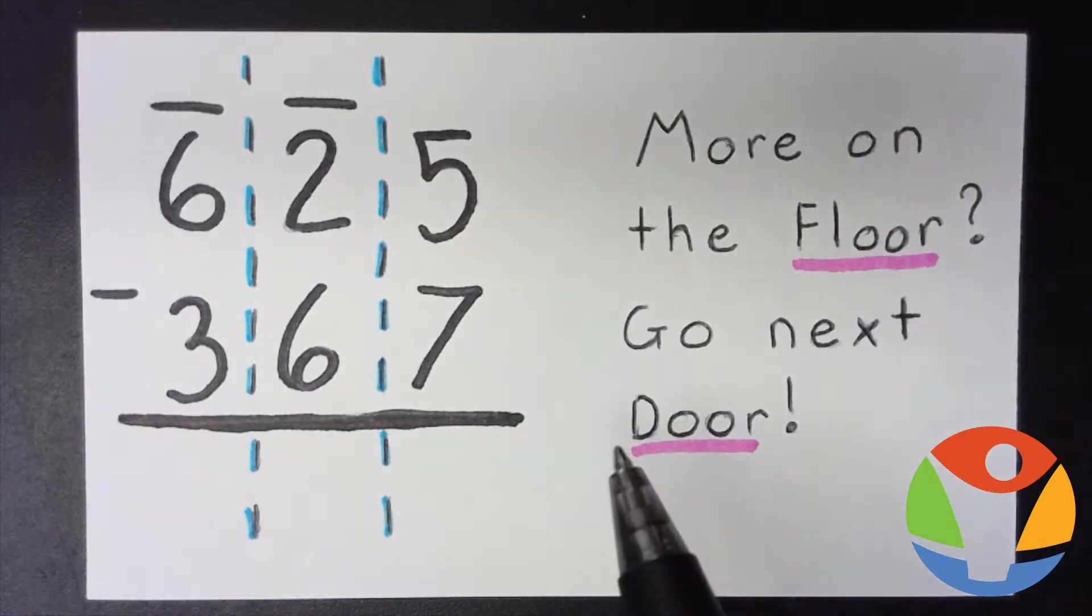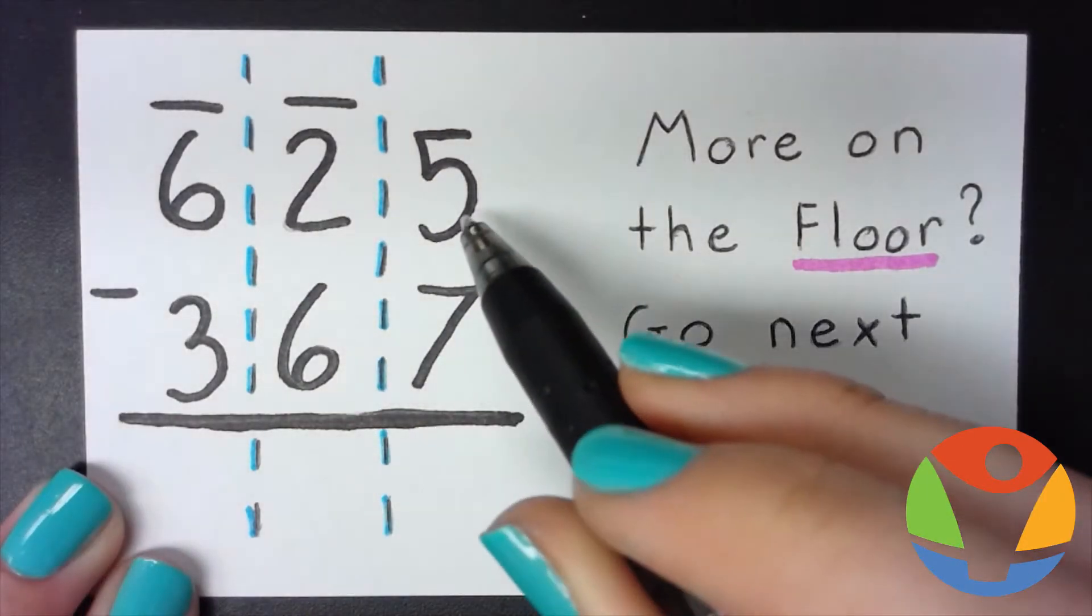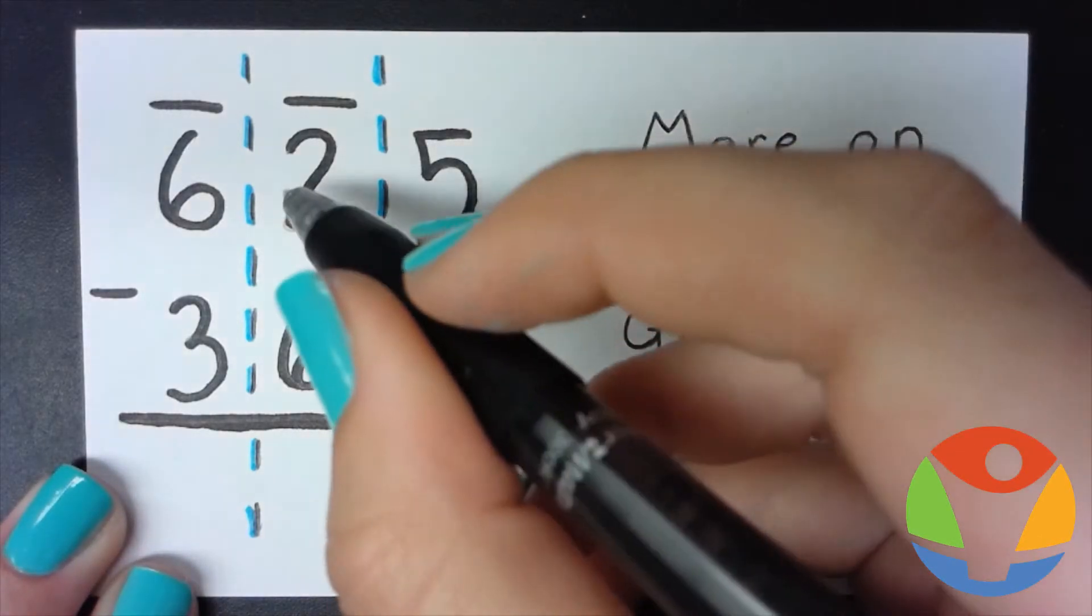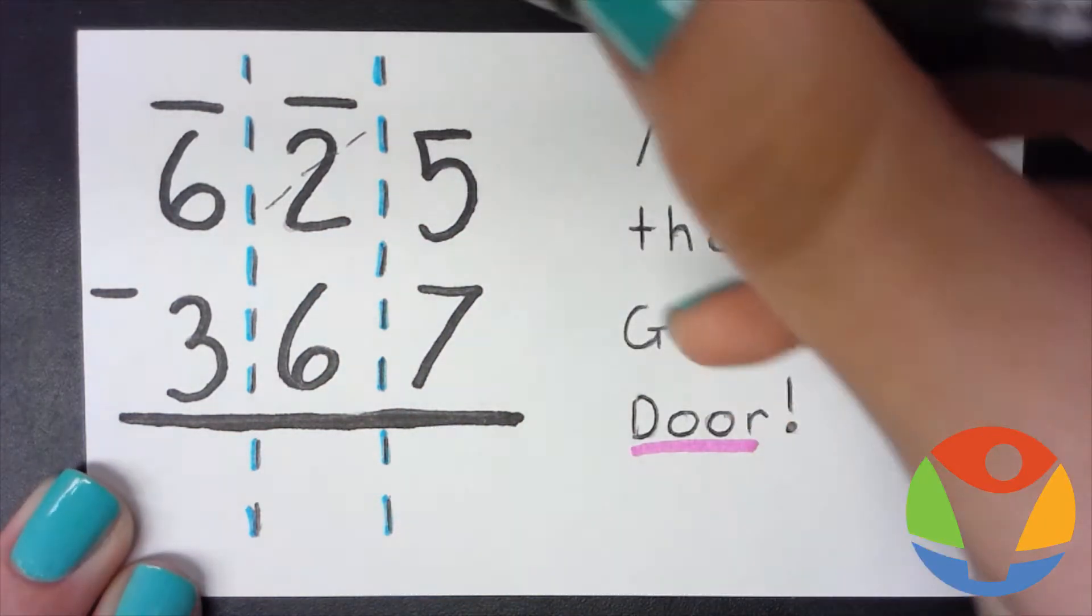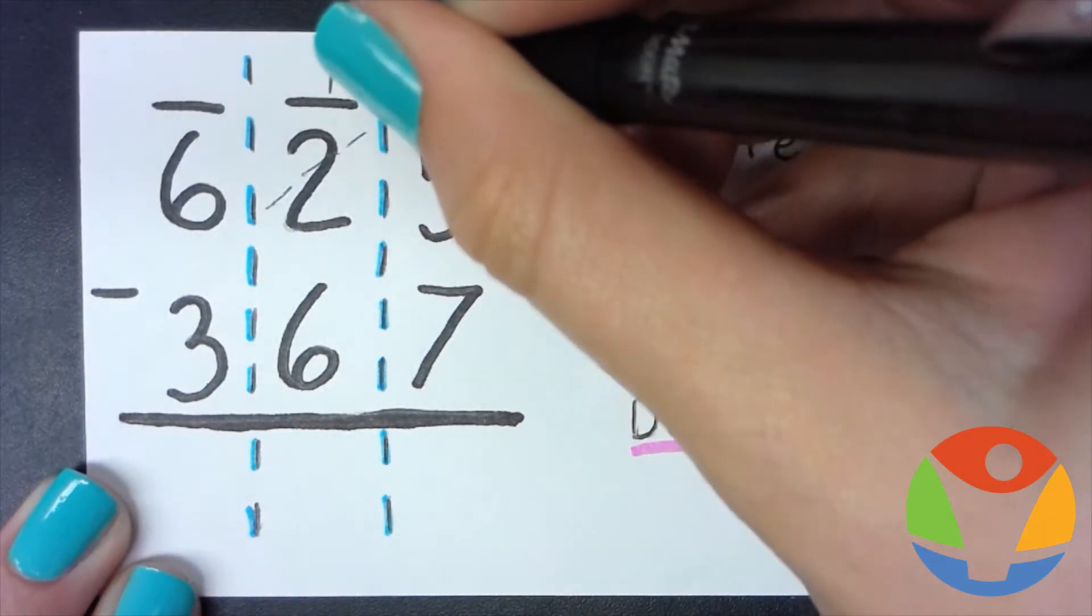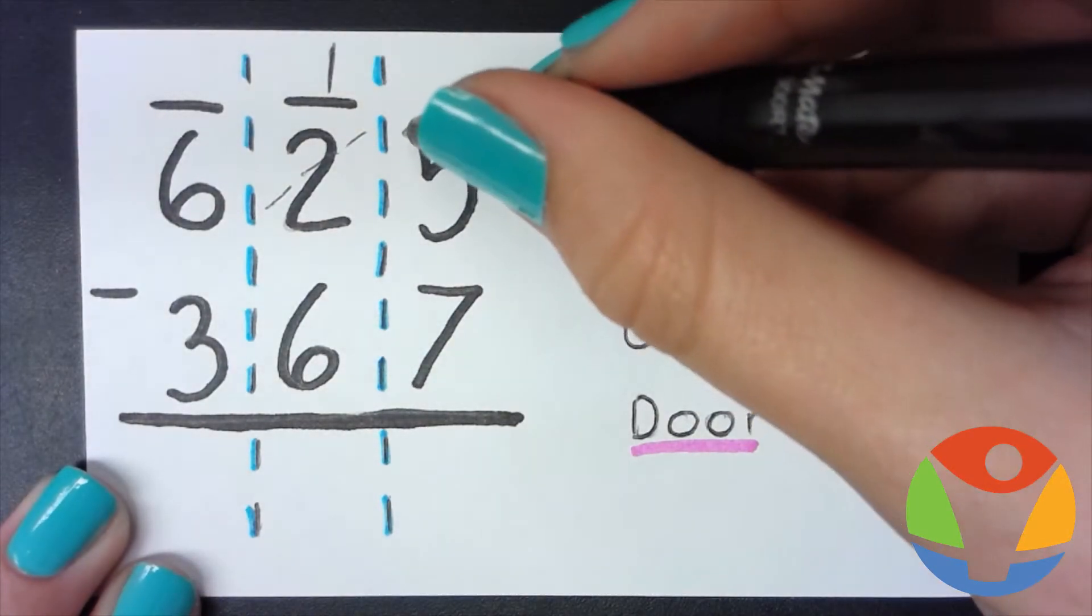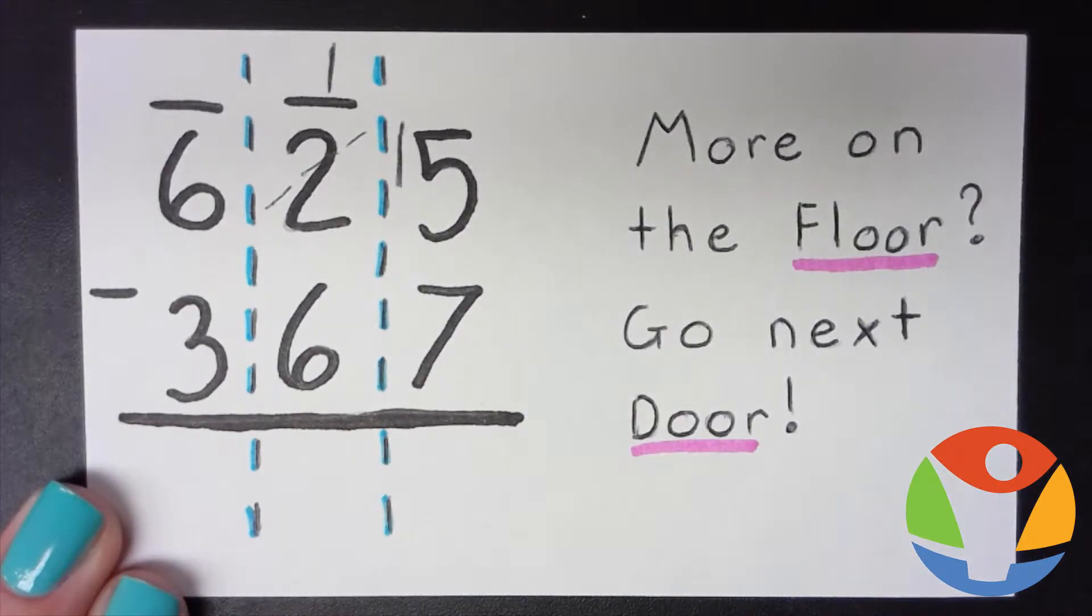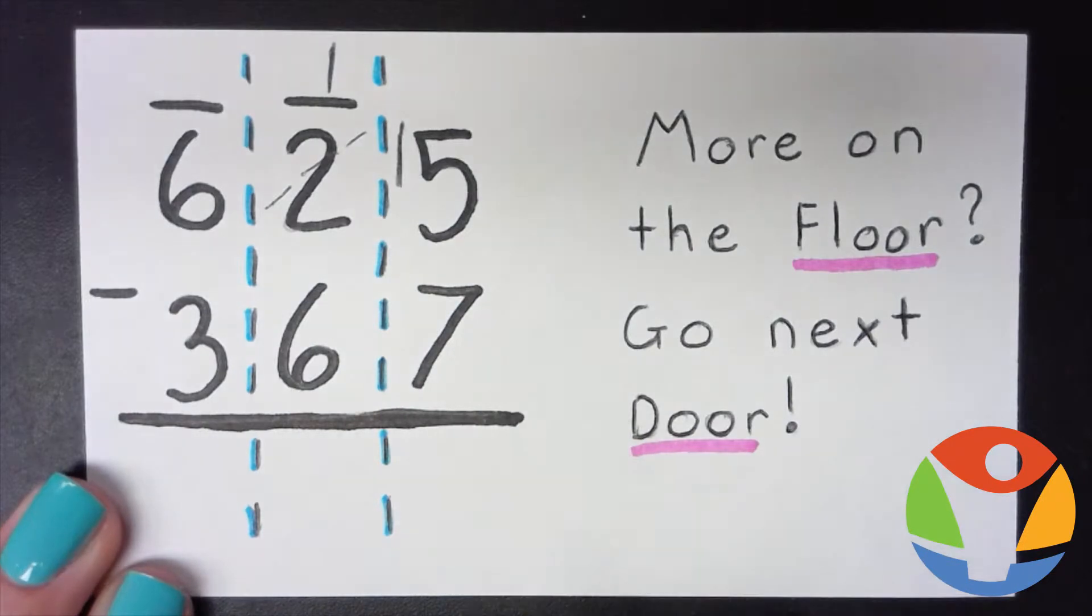Five is less than seven, so we're going to go over to this two and cross him out. Now that is a one, and we're going to bring a one right over here in front of the five. So that is 15 minus 7 now, and that will equal 8.